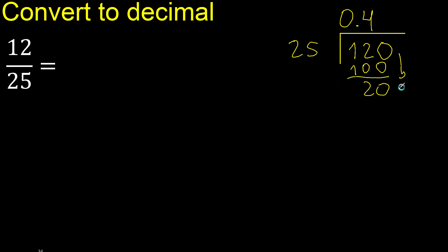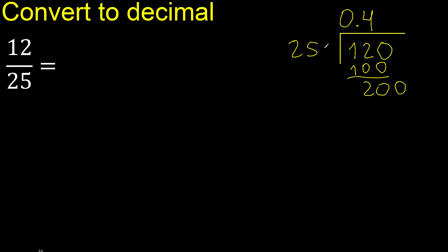There is no digit that goes down, therefore complete — always complete with 0. The point goes here, and point only once. 200. 25 multiplied by which number? Multiply by 8 is exact: 200.